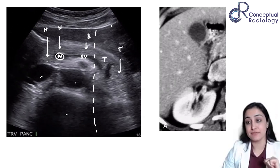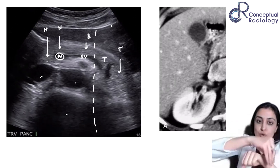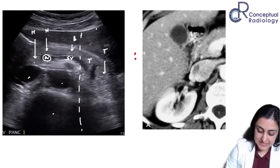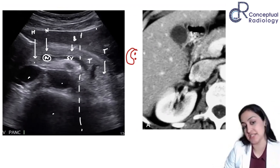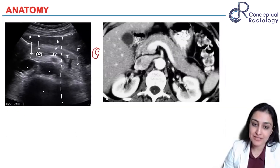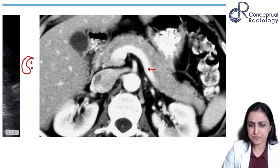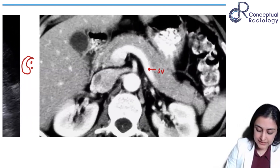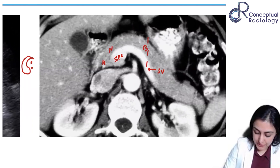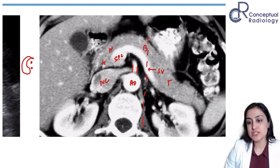The uncinate process is inferior. So where I see the SMA and SMV — SMA will be on the left, SMV on the right — the part of the pancreas running below it is the uncinate process. On CT, same thing applies. This is the splenic vein, this is the splenoportal confluence — so this is the head, this is the neck, this is the body, and drawing a line through the lateral part gives the tail of the pancreas. This here is the aorta, this is the origin of the celiac axis, and this is the IVC.